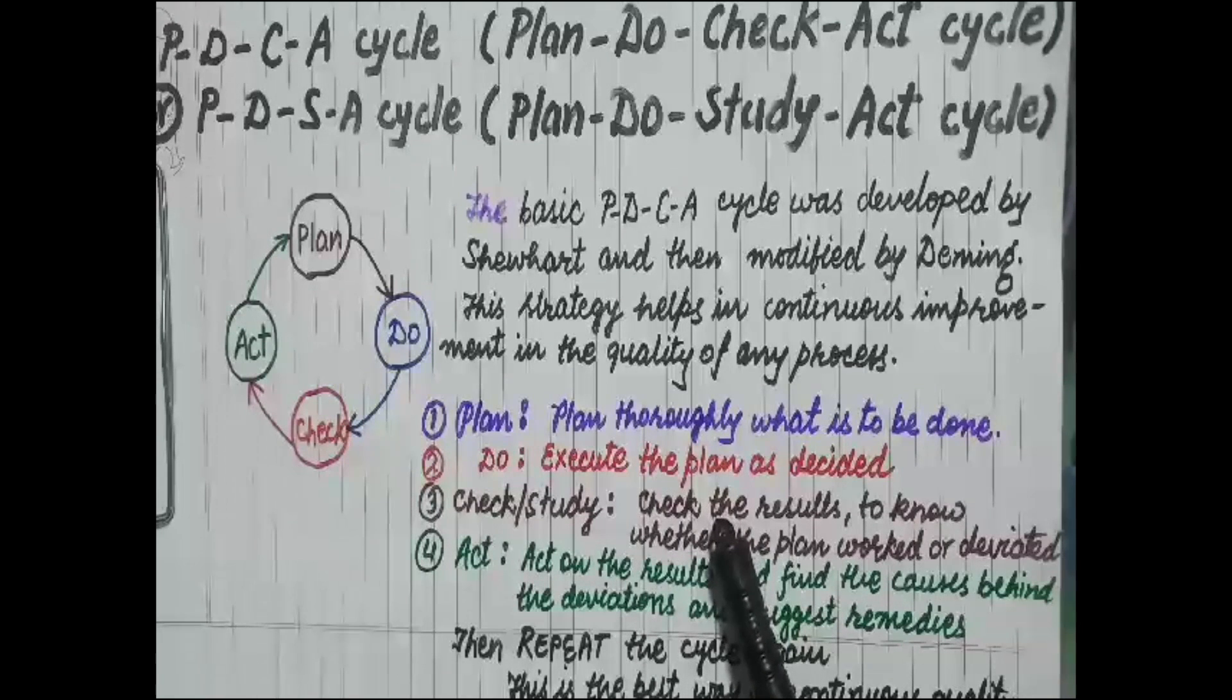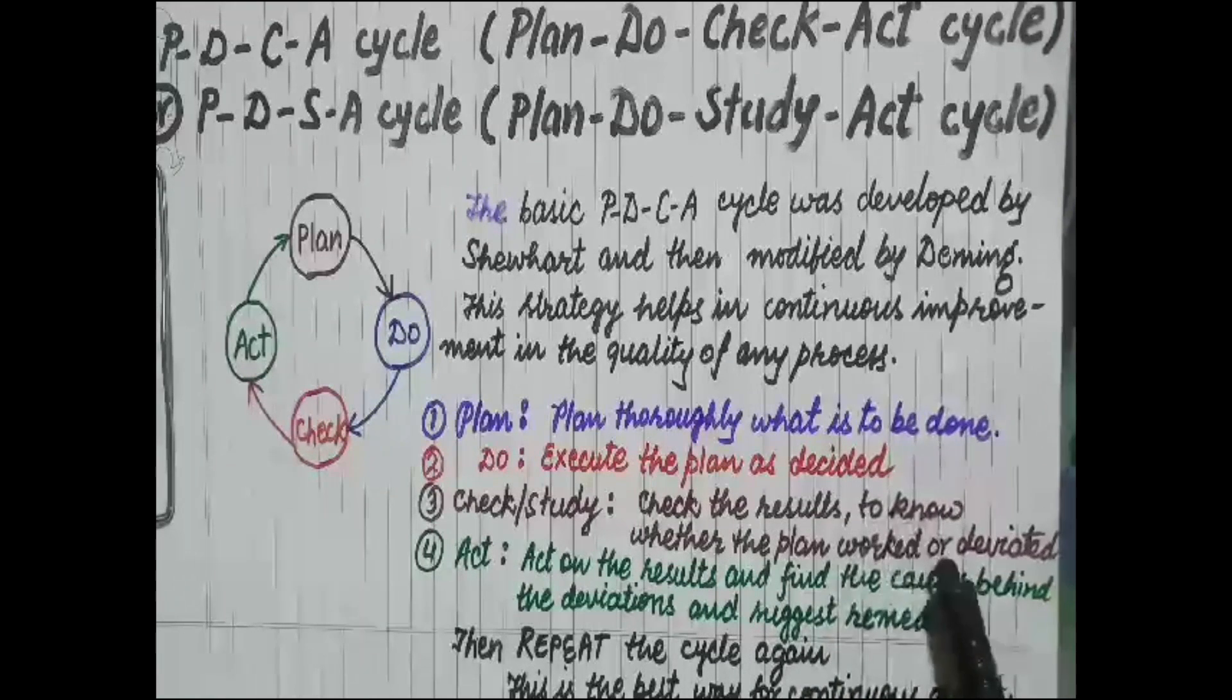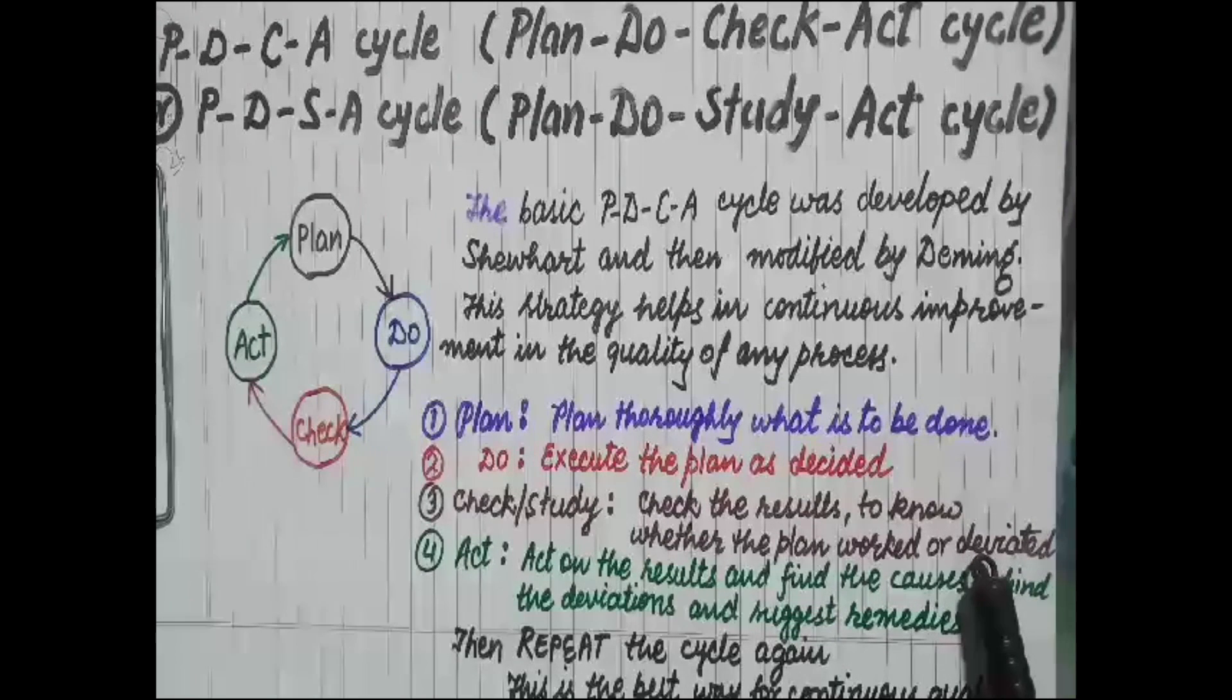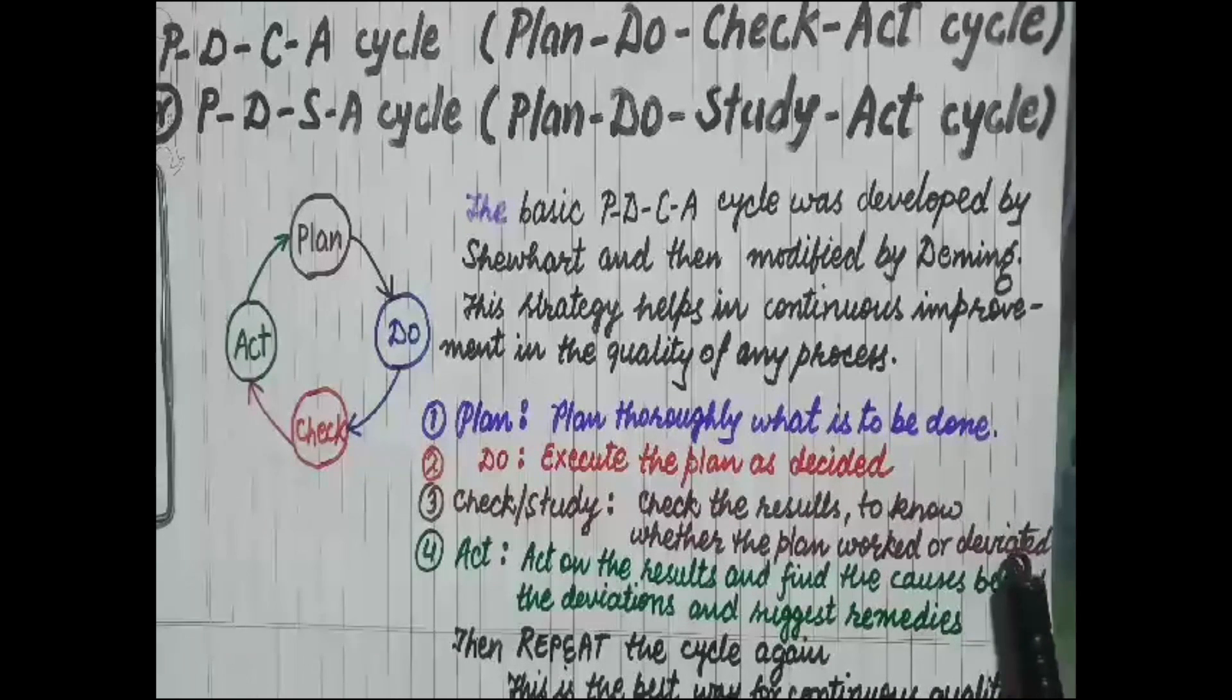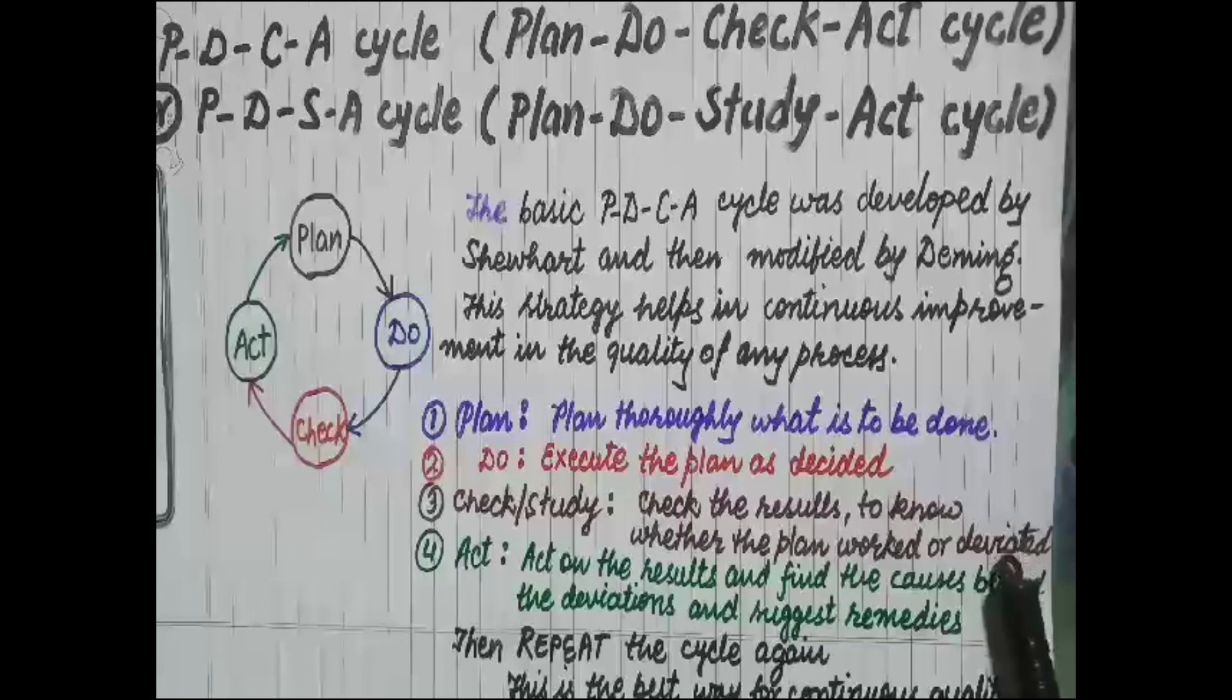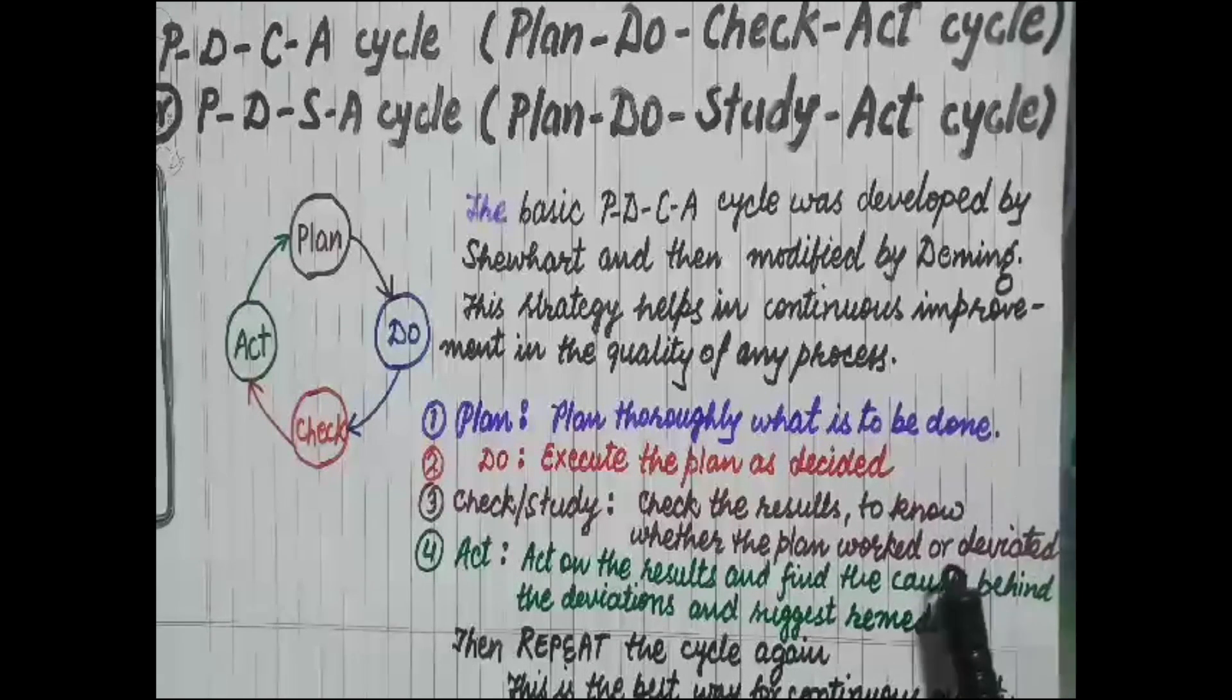results coming from that action, whether the plan worked or deviated. We have taken an example of a component - we will check all the specifications, all the quality characteristics and parameters of that component, which could be dimensions, weight, surface roughness, hardness, etc.